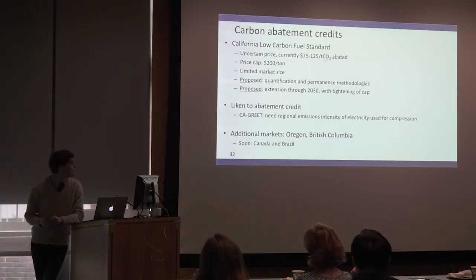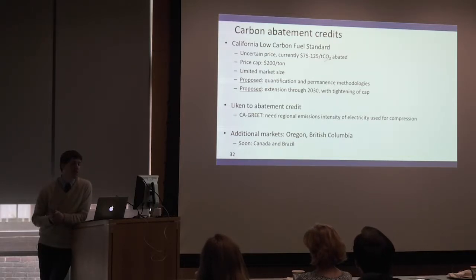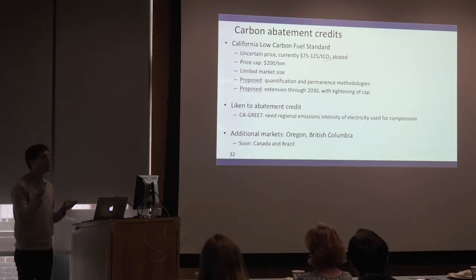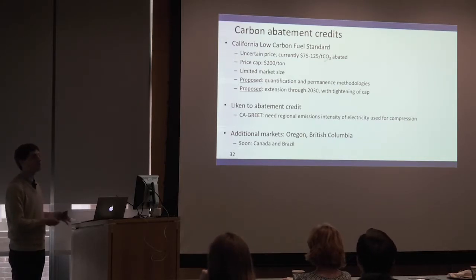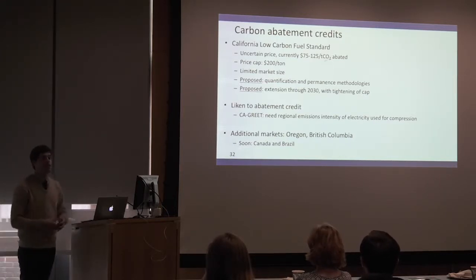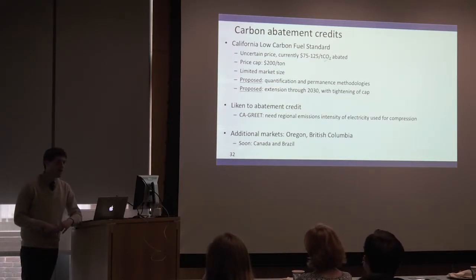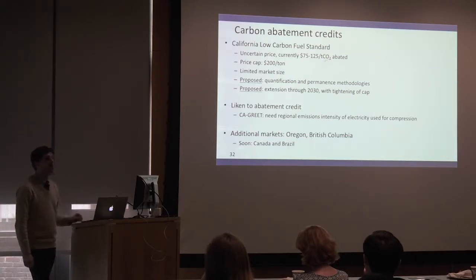The Air Resources Board in California is in the process of not only extending the program through 2030 and making it more stringent — which will cause prices to rise — but also adopting a quantification and permanence methodology for carbon capture and sequestration, which will explicitly pay for pathways to produce liquid transportation fuels that include CCS. It's likely that these will be adopted by end of year. With prices at over $100 per ton of CO2 abated, there's a lot of financial opportunity for ethanol producers able to sell fuel in California to make profits from putting CCS on their ethanol plants.